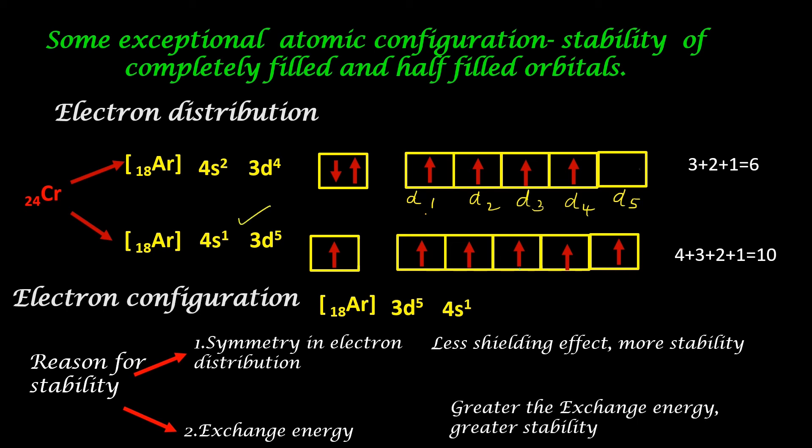So second option is the correct distribution of chromium. In addition to less shielding effect and high exchange energy, this also provides less columbic repulsion force. The repulsive force among the valence electrons will be less. So it offers more stability. Three factors which help stability are less shielding effect, less columbic repulsive force, greater exchange energy.